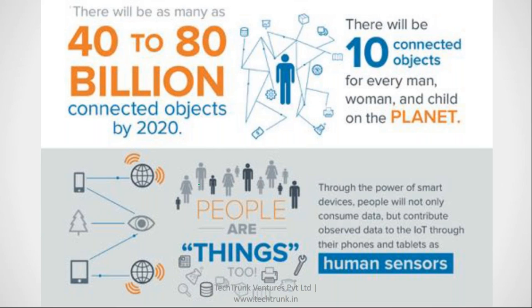By 2020, we will have 40 to 80 billion connected devices — around 8 to 10 devices per human being. You might have an idea that IoT is about connecting devices to the internet, but you might wonder how it creates a market and why people are talking about it. The main objective here is to clarify whether IoT is a real market requirement or just a pseudo image created in the market.